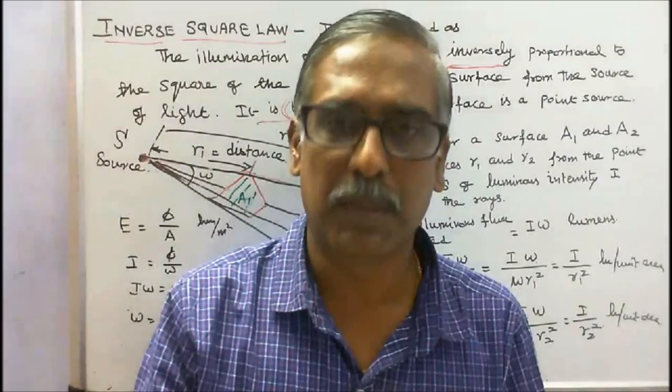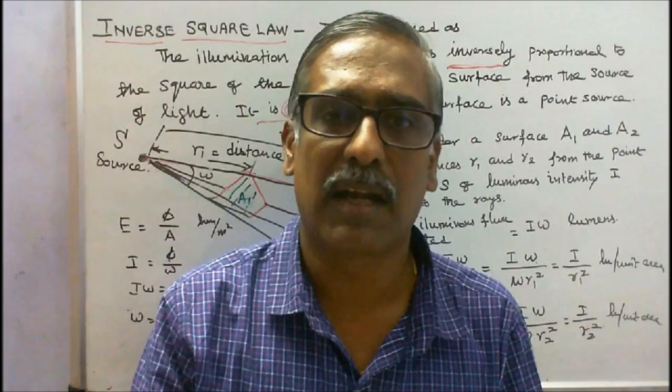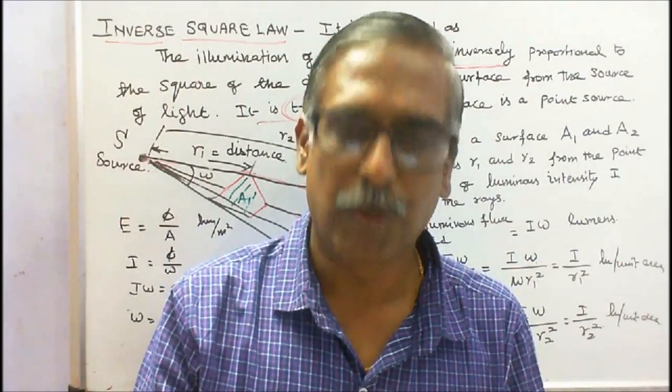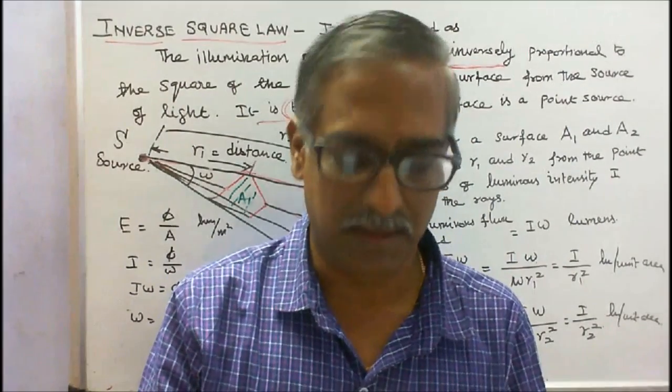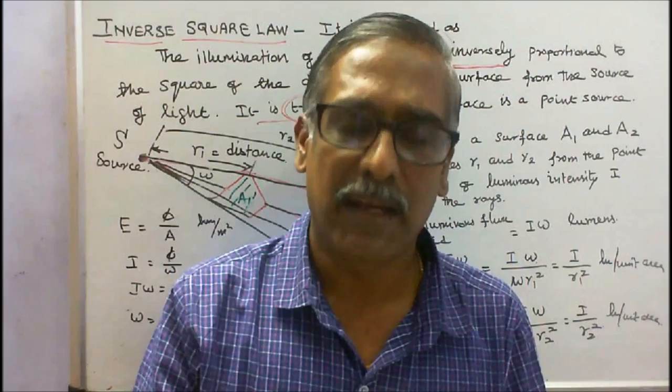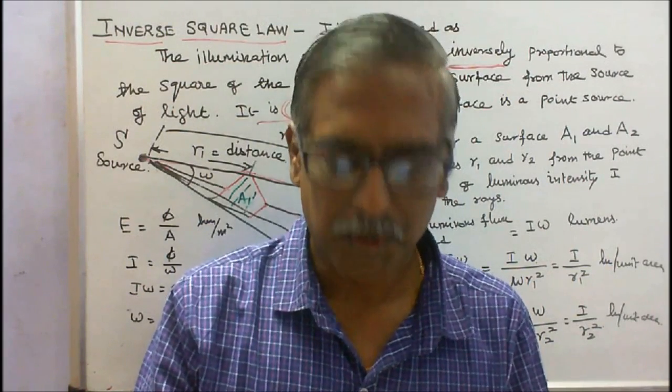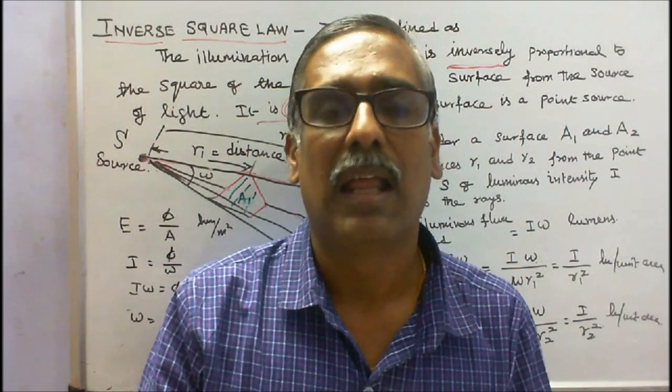Hygrometer is an instrument which is used to measure the moisture content in the atmosphere. Lambert died on 25th September 1777, in his 49th year on this planet. Even today he lives in the form of unit Lambert.